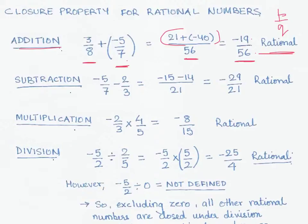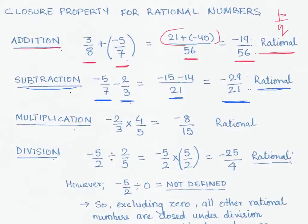Now let's look at subtraction. We are subtracting 2/3 from negative 5/7, so that is minus 5/7 minus 2/3. We take the LCM, which gives us 21 in the denominator, and in the numerator we get minus 15 minus 14, which equals minus 29 by 21. This result is in the form of p by q with the denominator not equal to 0, hence it is a rational number. You can try any two rational numbers and the result after subtraction will always be rational.